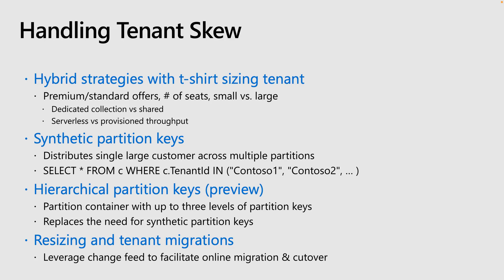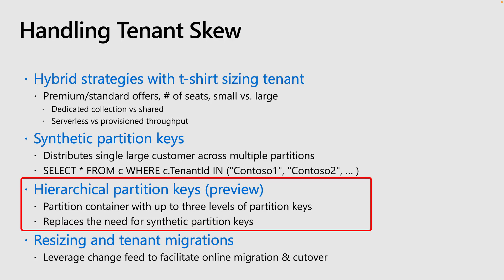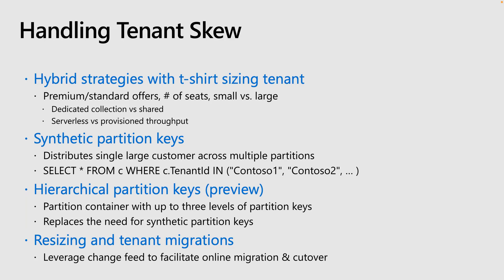A more elegant solution is to use an upcoming feature called hierarchical partition keys, sometimes referred to as sub-partitioning. This feature will allow you to partition a container with up to three levels of partition keys, replacing the need to use synthetic keys. Your first partition key would be tenant ID and your second partition key would be user ID. Queries executed at the tenant level would then touch only the partitions related to that tenant, not every partition related to every tenant, keeping the cost much more reasonable.